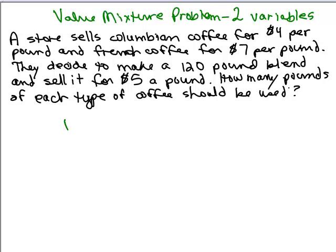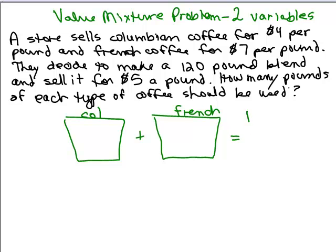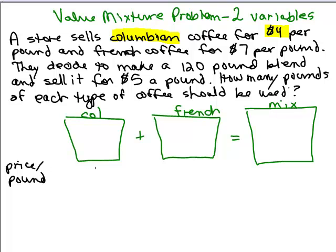So what do we have here? We've got some Colombian coffee and some French coffee, and we're going to put that together in a big mix. Now, how much is the Colombian coffee per pound? If I look right here, it says the Colombian coffee is $4 a pound. I always like writing the price per pound underneath. So the Colombian coffee is $4 a pound. What about the French coffee? The French coffee sells for $7 a pound.